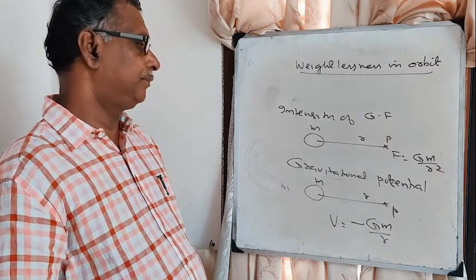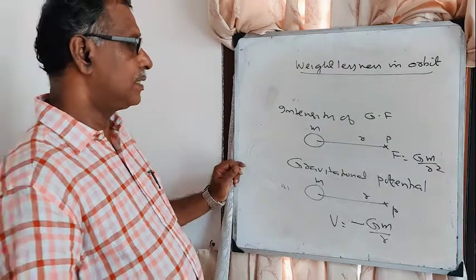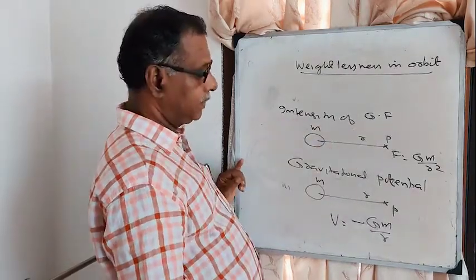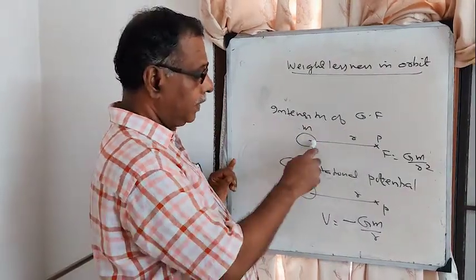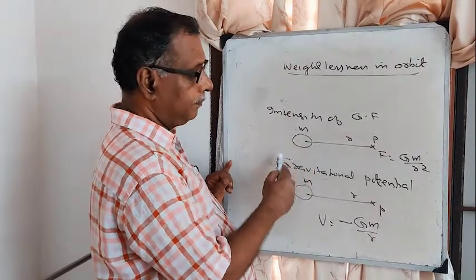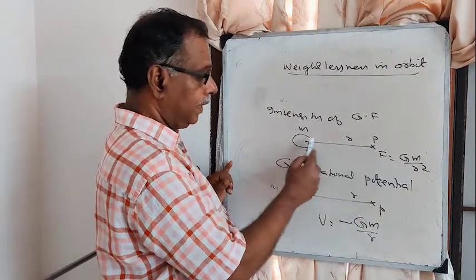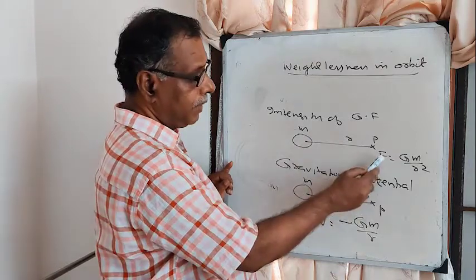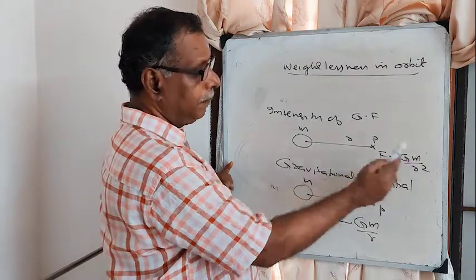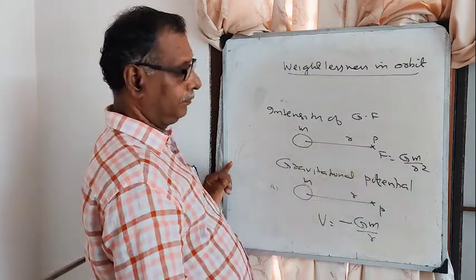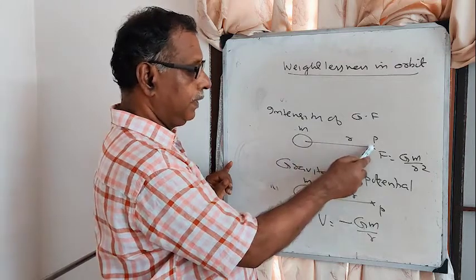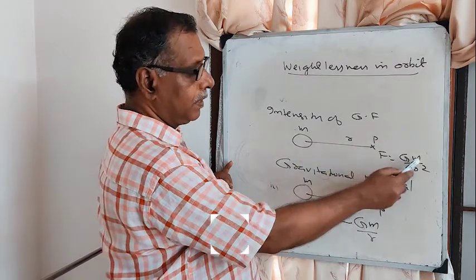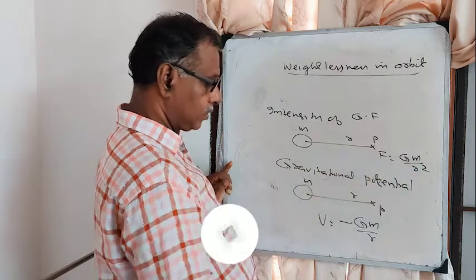The intensity of gravitational field at a point B at a distance R from a mass M is given by F = G·M / R².